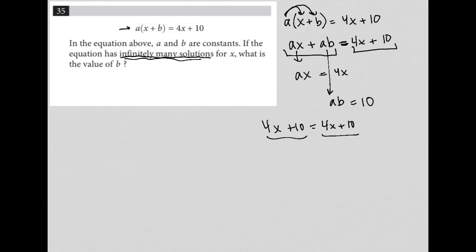So now if AX equals 4X, that tells me that A has to equal 4. And now down here, if A has to be 4, but A times B is 10, that tells me that 4B equals 10. And I can divide both sides by 4. And I know that B has to equal 10 over 4.